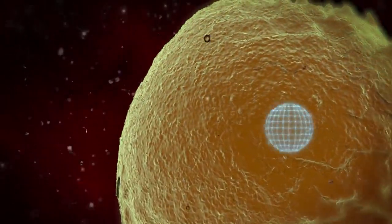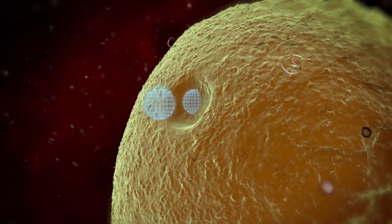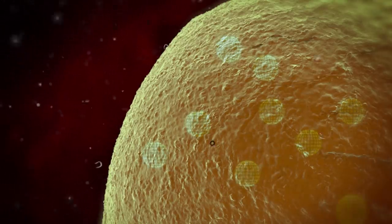By contrast, messenger RNA vaccines deliver genetic instructions to build these antigens directly into cells. The human body itself is effectively turned into a vaccine-making factory.